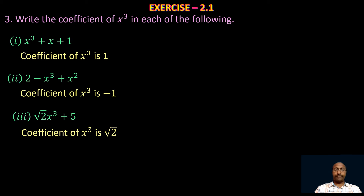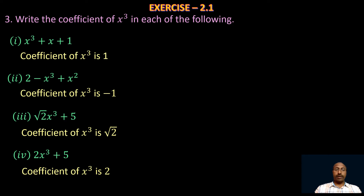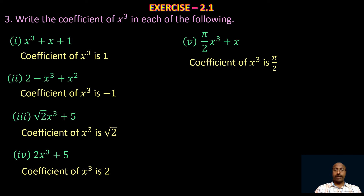Take the fourth one: 2x³ + 5 — here x³ is multiplied by 2. Take the sixth one: (5/2)x³ — the coefficient of x³ is 5/2. And for −(2/3)x³ — here x³ is multiplied by −2/3, so the coefficient of x³ is −2/3.